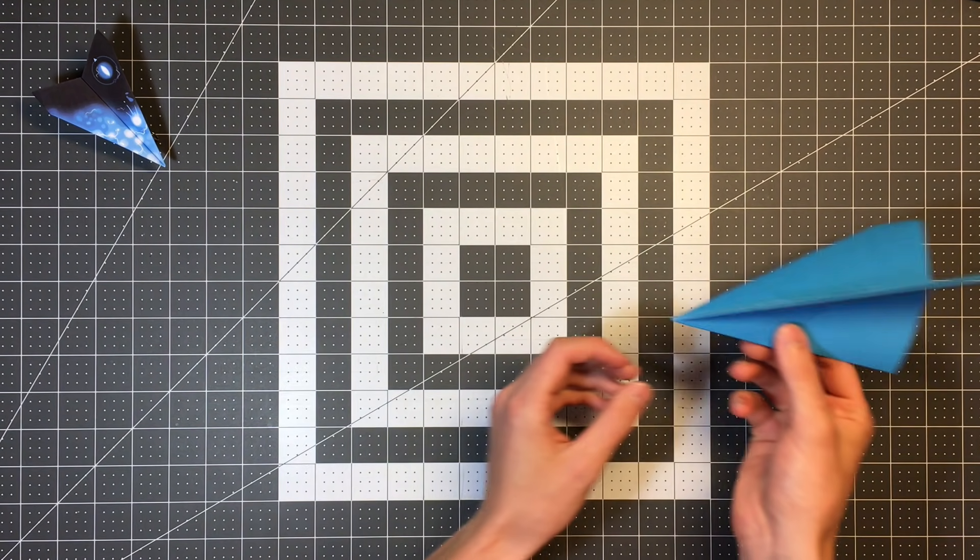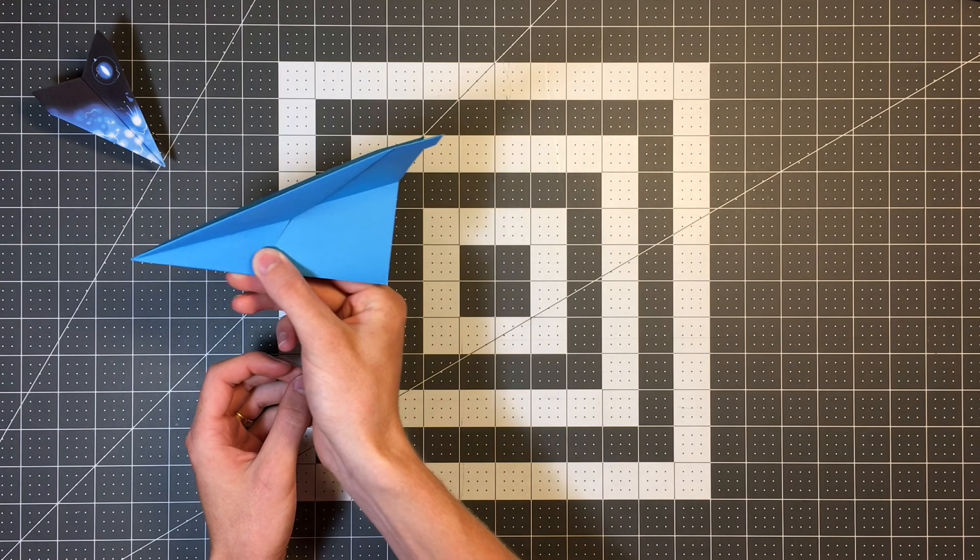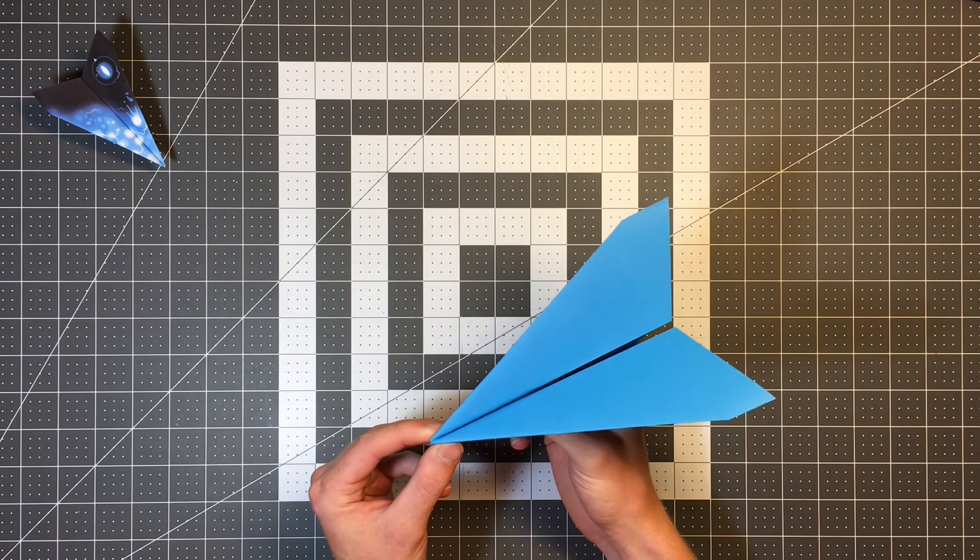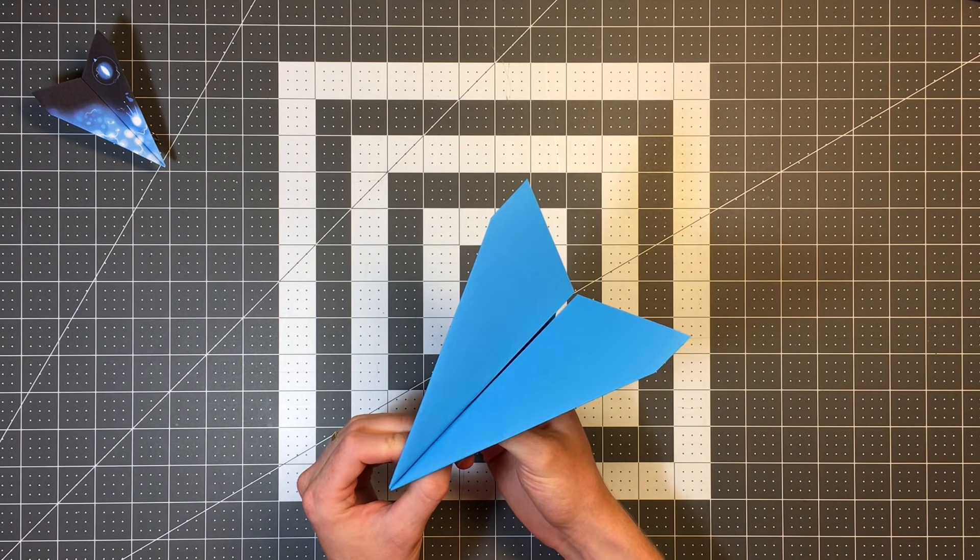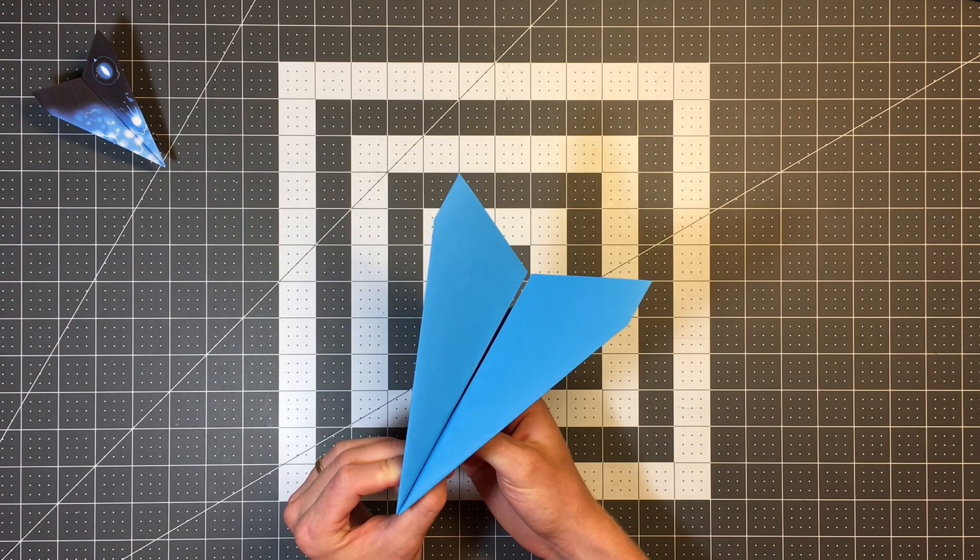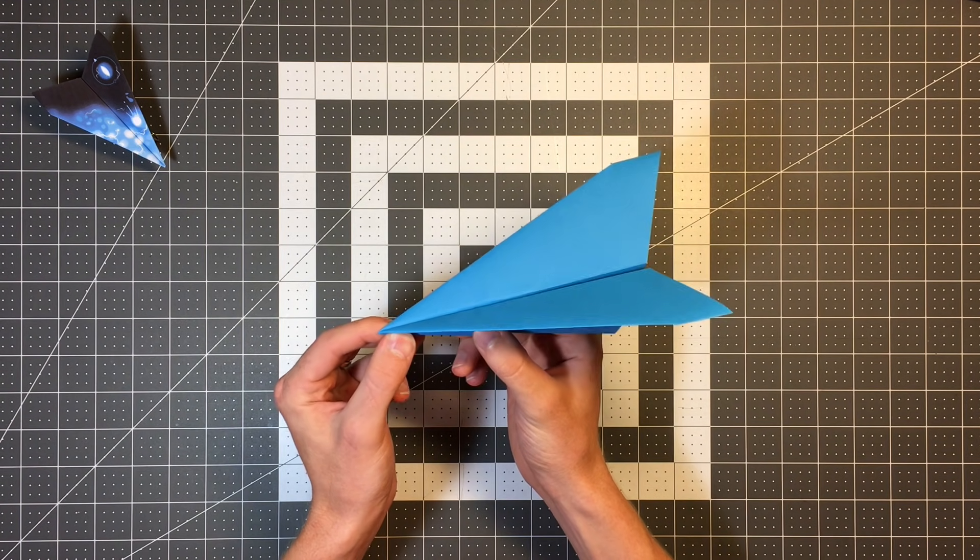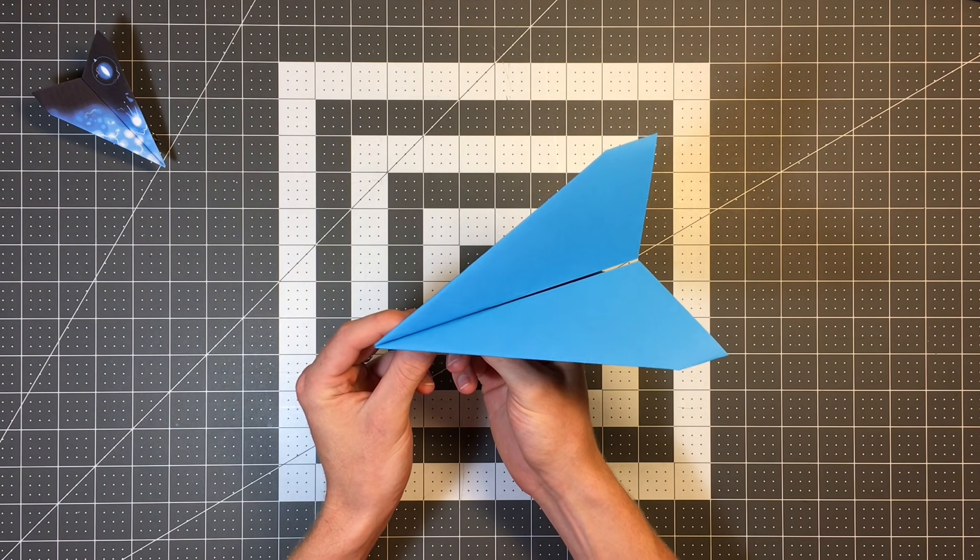Moreover, the layers all obey the direction of airflow. That means as it moves through the air, none of those layers are catching the air. So this is an excellent flyer. I think it easily flies 150 feet. I don't have a space large enough to test it indoors, but I do believe that it'll fly that far.